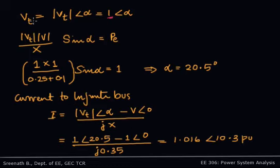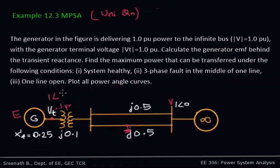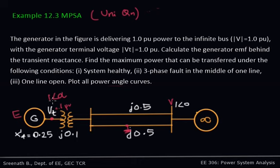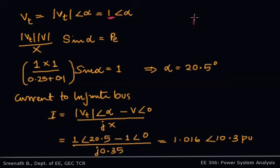The terminal voltage is Vt at angle alpha. Since the angle is not specified, we assume alpha is the angle, so it is 1∠α. The power transferred is one per unit. Using the general equation P = (EV/X) sin δ, we write Vt·V / X · sin α, where alpha is the angle between Vt and V. The angle of V is zero as reference, so Vt∠α gives us that angle.